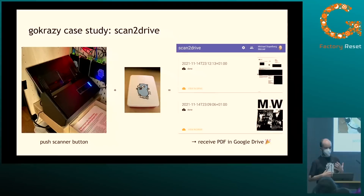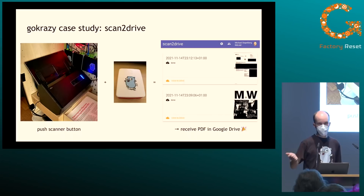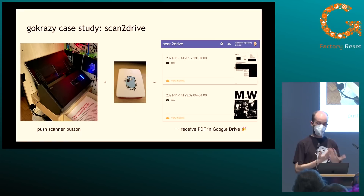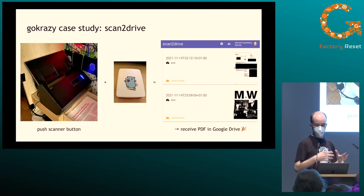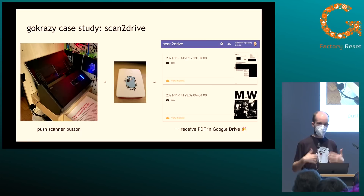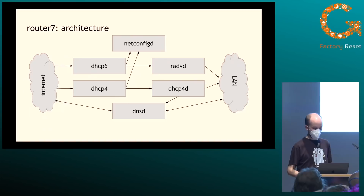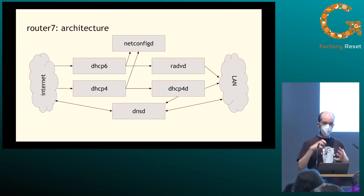One of my favorite use cases is what's called scan-to-drive. Whenever I get new paper mail, if it's important I put it into the scanner, push the scanner button, and a couple of seconds later the connected Raspberry Pi will have scanned all the pages, arranged them in the proper order, and converted them into a black-and-white PDF which is uploaded to Google Drive where I can use full-text search on all my documents automatically. There's also an option to store locally if you prefer. Scan-to-drive is compatible with any scanner that can use AirScan.